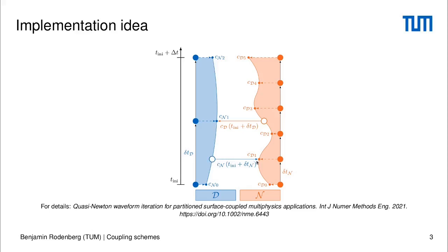From these pieces of data we can create a quadratic interpolation and with this quadratic interpolation we can provide data for the other participant, which it might sample at any place it likes. This is something we discussed in our paper, so I don't want to go too deep into the theory. Today my goal is to go in a more practical direction and show you the implementation of our API that we currently have in PreSize for this purpose.